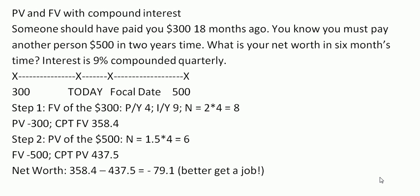The P/Y is 4 because it's compounded quarterly, and I/Y is 9. For N: they should have paid you that money 18 months ago, and the focal date is 6 months on from today, so the total time between that debt and the focal date is one and a half plus half a year equals 2. N is 2 times 4 equals 8. Set PV as minus 300, compute FV, and we get $358.40 — the dated value of the $300 on the focal date.